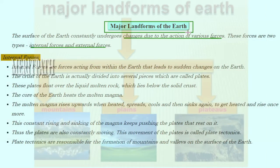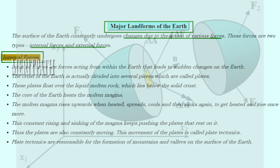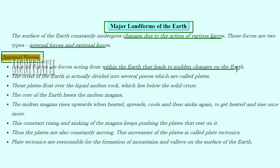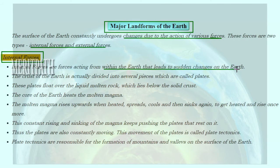Let's talk about a new chapter called Major Landforms of the Earth. Earth is a planet with many continents, countries, and states. The earth undergoes changes due to the action of various forces, and these forces can be of two types: internal forces and external forces. Internal forces are acting within the earth, from inside, and these forces lead to changes in the surface of the earth.